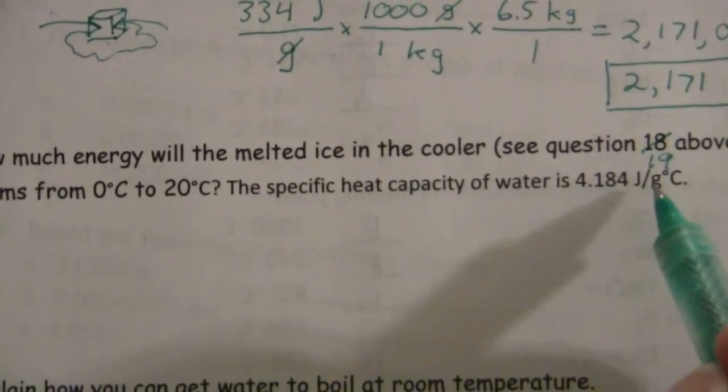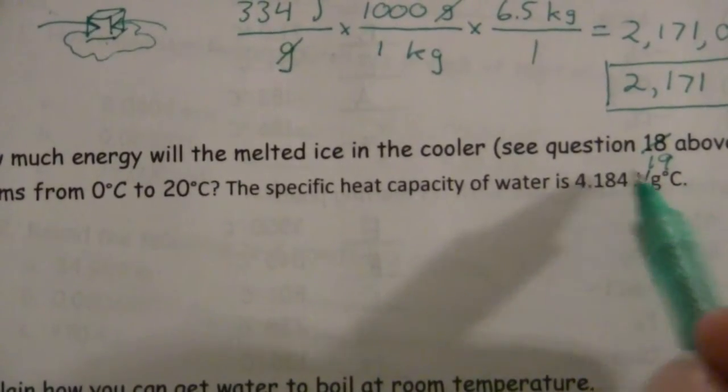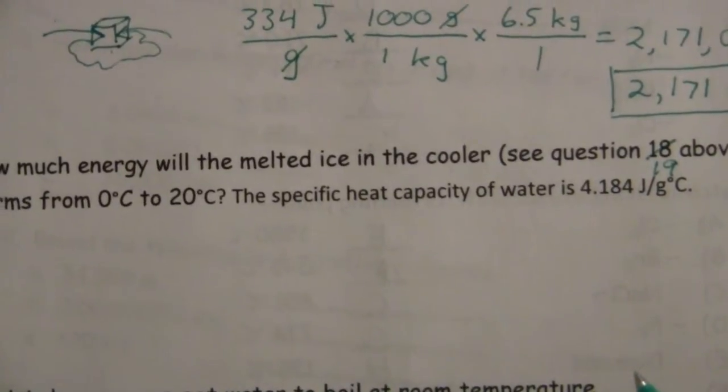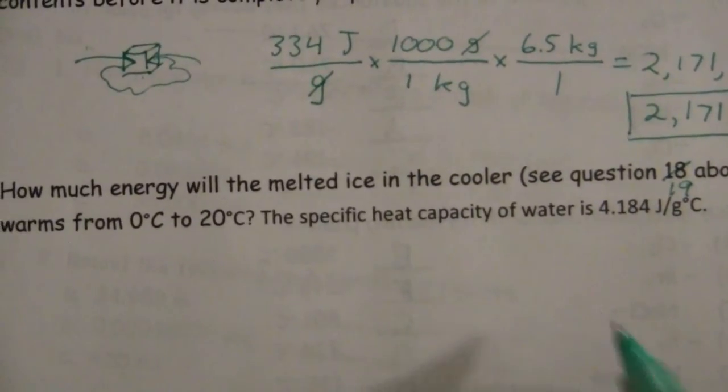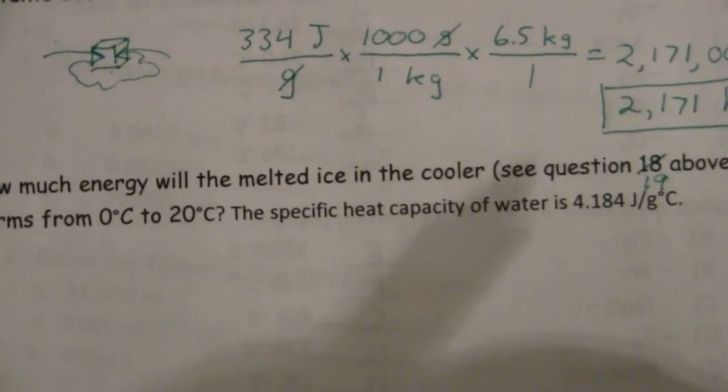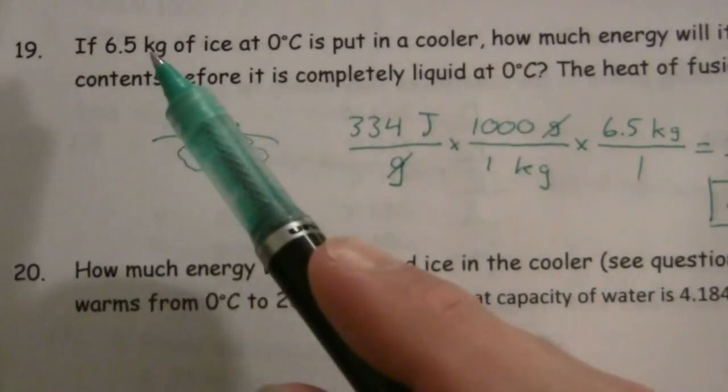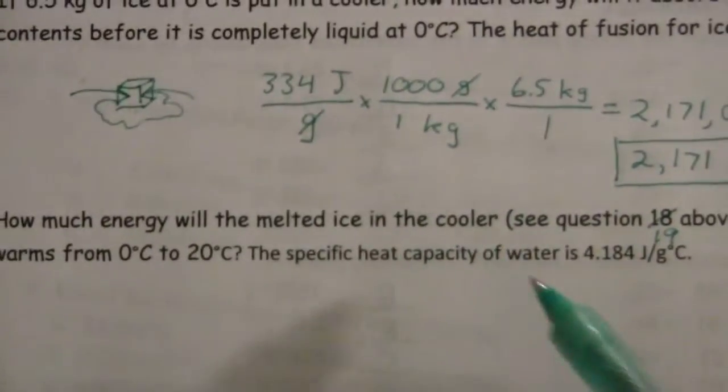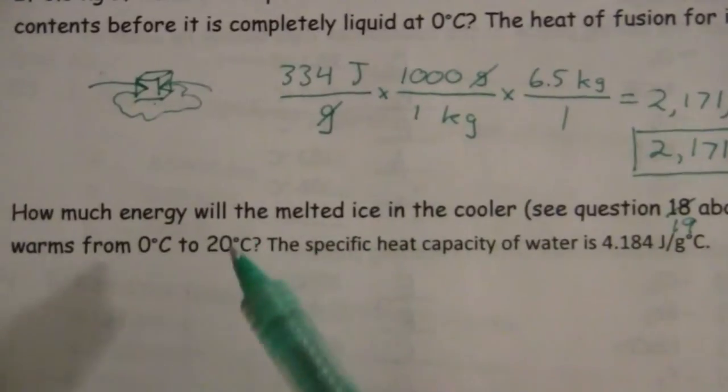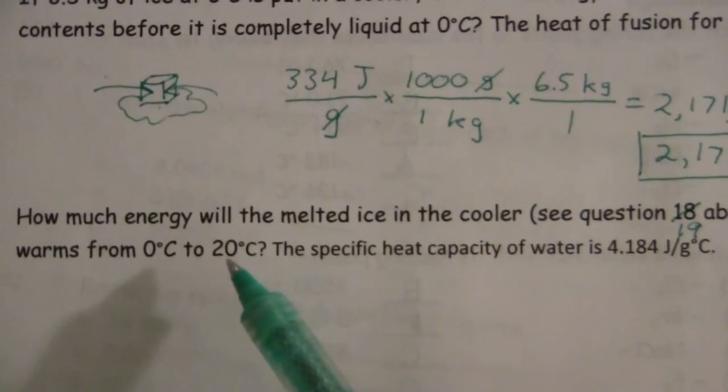So, for every gram to warm up 1 gram of water per degree Celsius. So, to warm 1 gram, 1 degree, it requires 4.184 joules. But, we have how many grams? Well, we have 6.5 kilograms. And, we're warming not 1 degree, but 20 degrees.